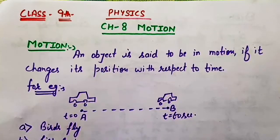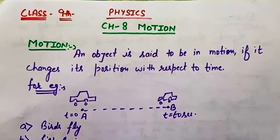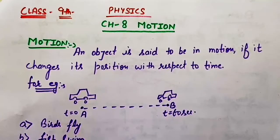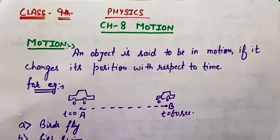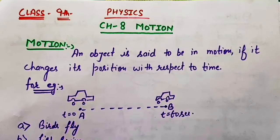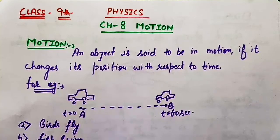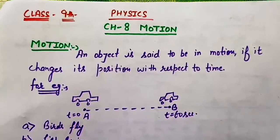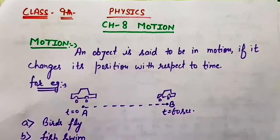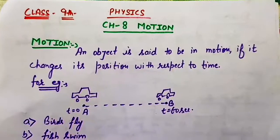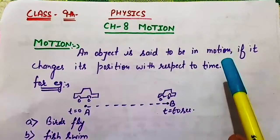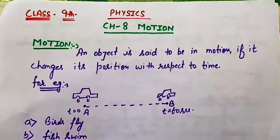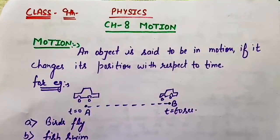Hello students, this is the lecture of physics for class 9th. In this lecture we will study about Chapter 8, which is Motion. So first of all we need to know what is motion. An object is said to be in motion if it changes its position with respect to time.